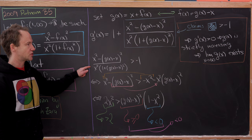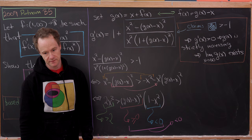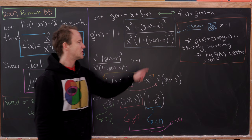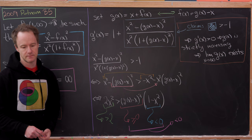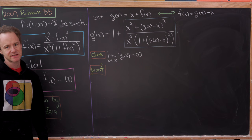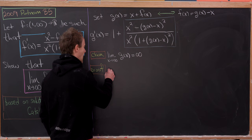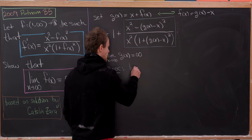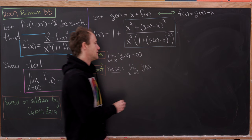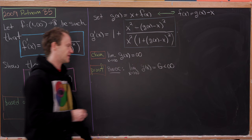Since g prime > 0, g(x) is strictly increasing, so its limit as x → ∞ exists. Now we need to prove that limit is actually infinite. By way of contradiction, suppose the limit as x goes to infinity of g(x) equals some finite number G.